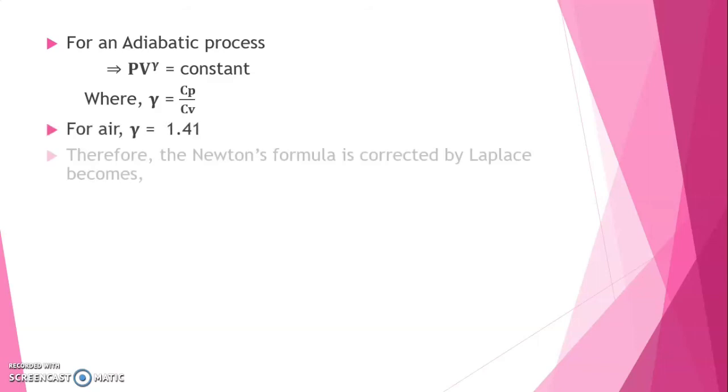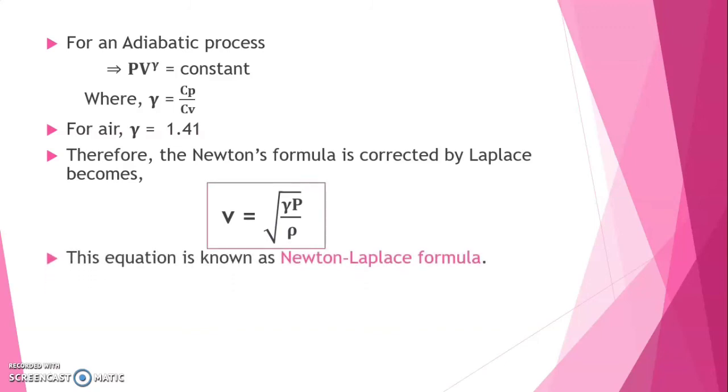Therefore, Newton's formula is corrected by Laplace becomes V equals root over gamma into P divided by rho. This equation is known as Newton-Laplace formula.